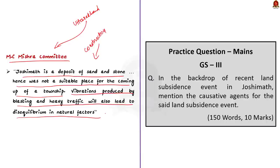Vibrations produced by blasting and heavy traffic will also lead to disequilibrium in natural factors, yet there has been continuous development of large-scale infrastructure in and around Joshimath, which the committee report was totally against. Through this discussion, we learnt about Joshimath's location and the causes of land subsidence which happened in the first week of January 2023. We will now move on to the next article discussion.